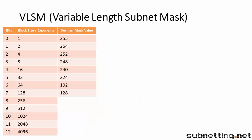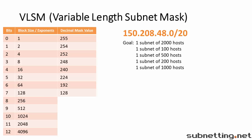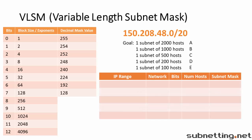Let's do one more. Suppose our network is 150.208.48.0 slash 20, and you want to divide it up into networks as shown. First we'll reorder the subnets by number of hosts from highest to lowest. Now we'll name our networks and create our chart. The first network needs 2,000 hosts, so let's find the lowest power of 2 that is greater than or equal to 2,002. That's 2,048, so we need 11 bits. The number of hosts will be 2,046. The subnet mask is 32 minus 11, which is slash 21.